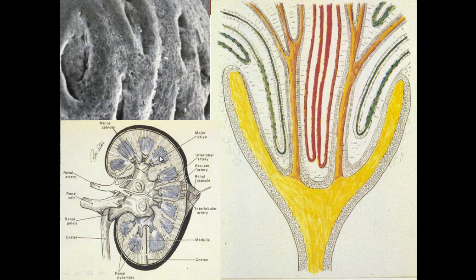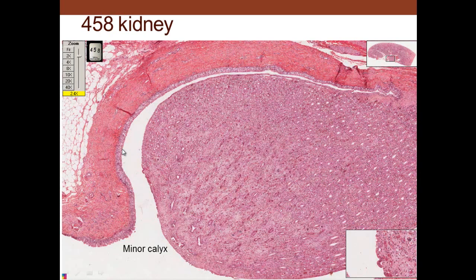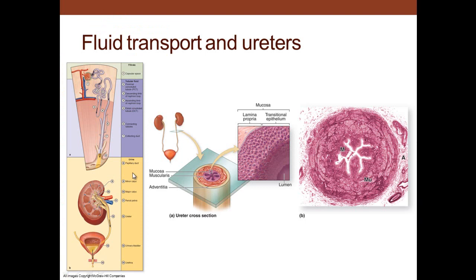Coming down from the medulla, you have the minor calyx, major calyx, renal pelvis, and then the ureter. In some domestic animals, you have papillary ducts, so collecting ducts go to papillary ducts and then to the minor calyx. Here we see the kidney with medulla, cortex, and the minor calyx with transitional epithelium on either side. From the minor calyx, you go to the ureter, then to the urinary bladder. We can see transitional epithelium in the ureter.